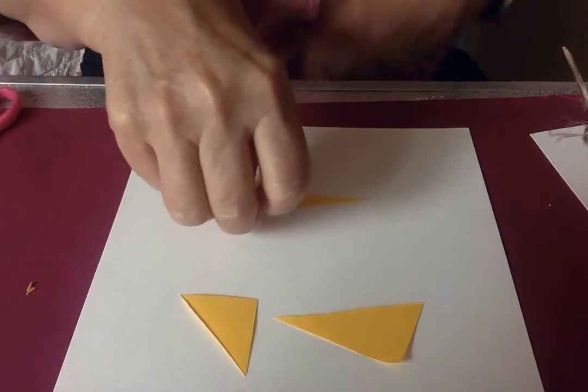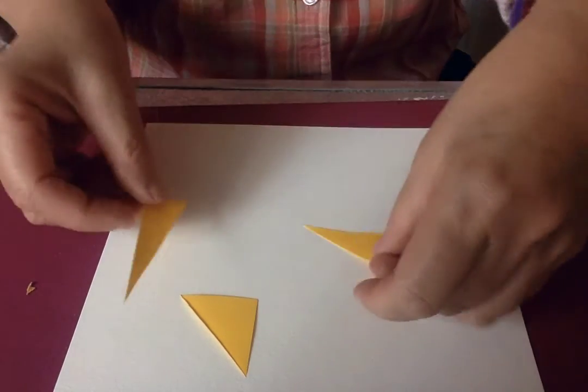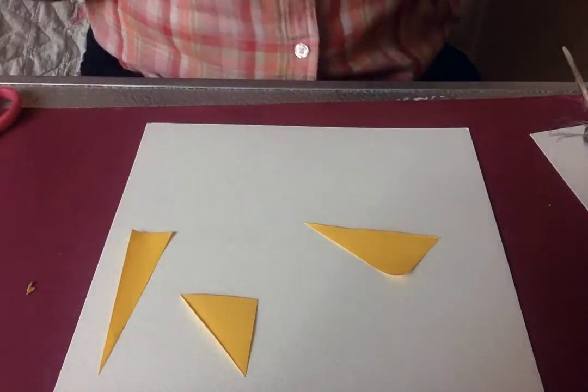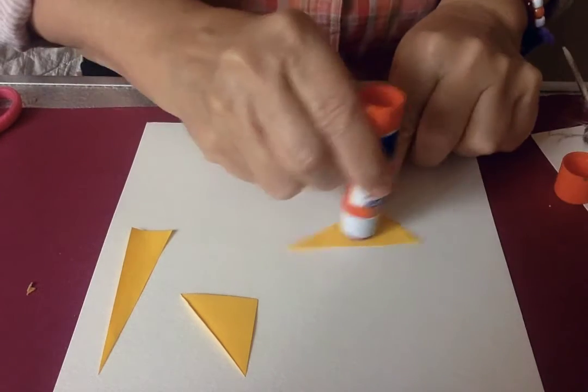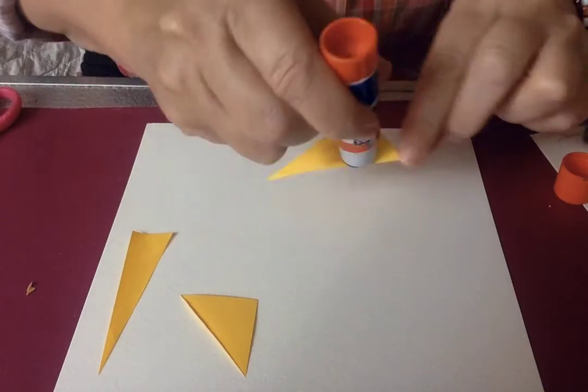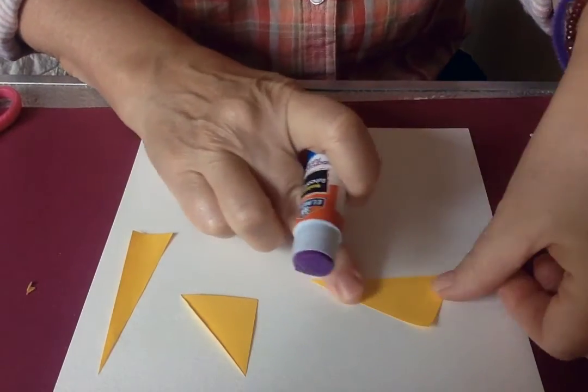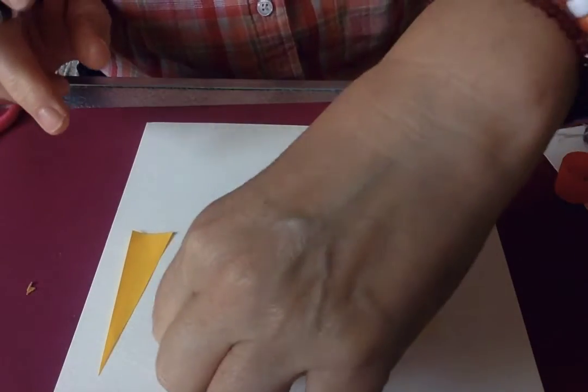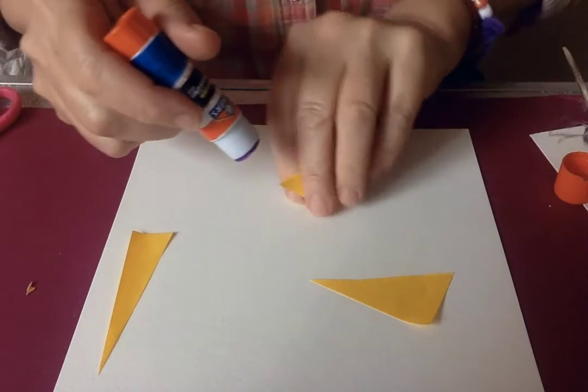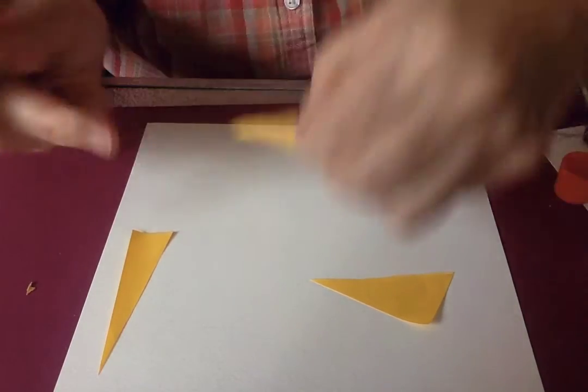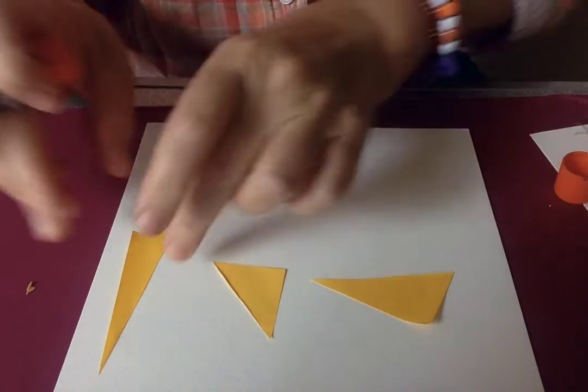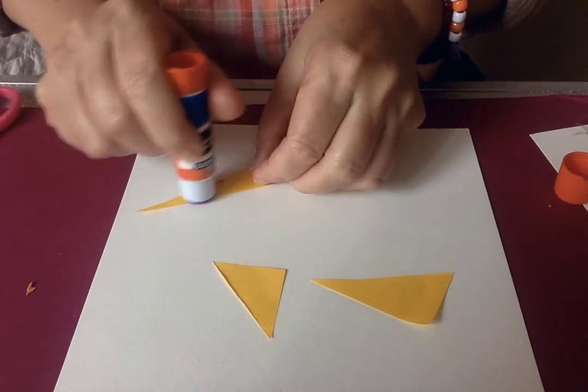When you have three triangles, you are going to use some glue and you will stick them down onto your piece of paper. Here's one. Here's two. And here's three.